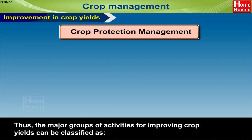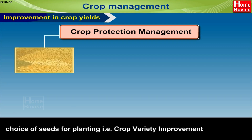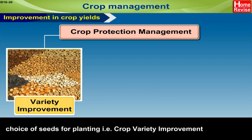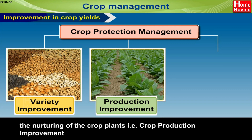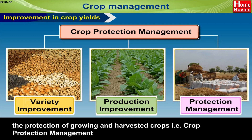The major groups of activities for improving crop yields can be classified as: first, choice of seeds for planting, that is crop variety improvement; second, the nurturing of the crop plants, that is crop production improvement; and third, the protection of growing and harvested crops, that is crop protection management. Let's have a look at these in detail.